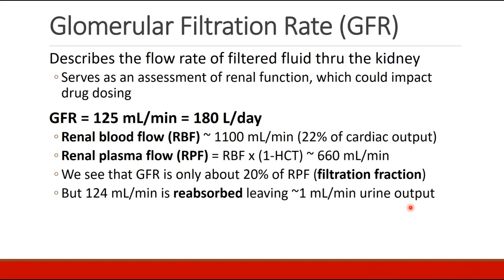The glomerular filtration rate, or GFR, describes the flow rate of filtered fluid through the kidney, and we use it as an assessment of renal function, which could impact our drug dosing. Normal GFR is 125 milliliters per minute, which equals 180 liters per day. Renal blood flow is about 1,100 milliliters per minute — about 22% of cardiac output. The renal plasma flow can be calculated as one minus the hematocrit times renal blood flow, giving approximately 660 milliliters per minute.